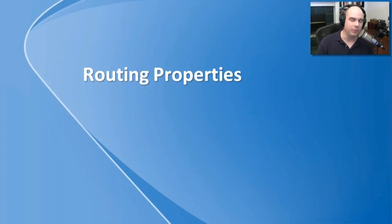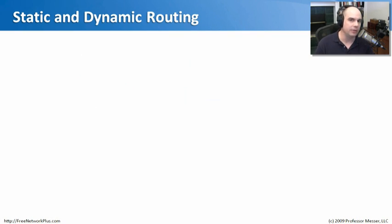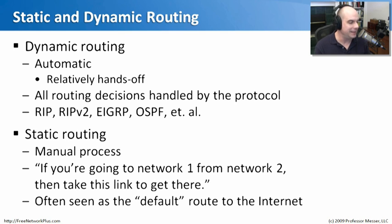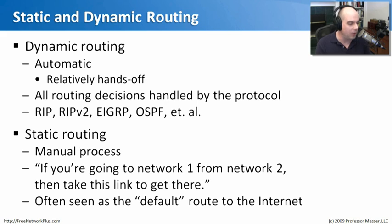Two important routing properties for the Network Plus exam are static routing and dynamic routing. Dynamic routing, as the name implies, is automatic and hands-off — all routers can make changes to routes on the fly, with routing decisions handled by protocols like RIP or OSPF, deciding at any point how traffic should route around network changes. Static routing is a manual process where you manually tell your router: if traffic is going to this network, always go this direction. You've essentially programmed your router statically. This is useful for setting up a default route to the internet — take anything not on our internal network and send it out through this link.